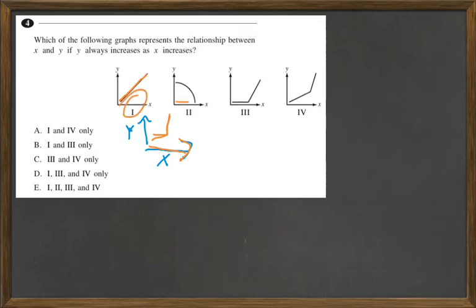On graph 2, as x gets bigger, y gets smaller — so no. On graph 3, as x gets bigger, y stays the same for a while, then gets bigger — so it can't be that one. On graph 4, as x gets bigger, y gets a little bigger, then a lot bigger, but it's still increasing the whole time.